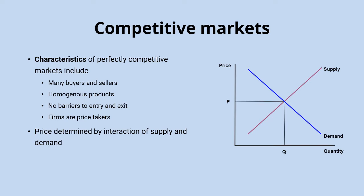Firms in that market are price takers — they accept the going market price, which is determined by the interaction of supply and demand. The equilibrium price is where supply equals demand, and then the individual firm takes that going market price and faces a perfectly elastic demand curve because they are price takers.